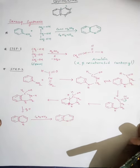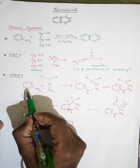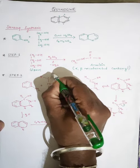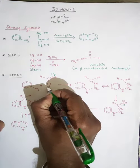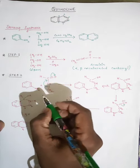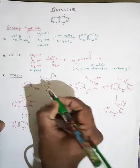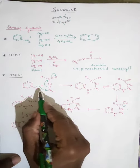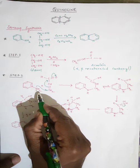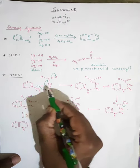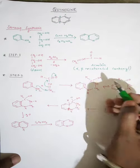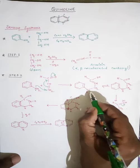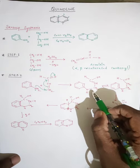In step two, the amine and the alpha-beta unsaturated compound acrolein are taken. The pi bond shifts, causing this carbon to get a positive charge. The lone pair of electrons on the nitrogen attacks this positive carbon. The benzene ring carries a plus charge which is neutralized by a hydrogen joining the oxygen as –OH.